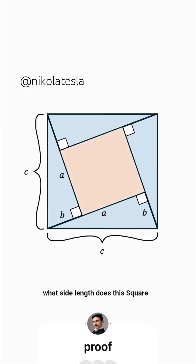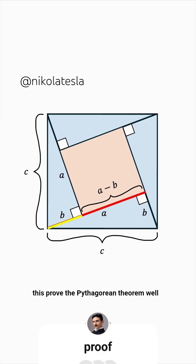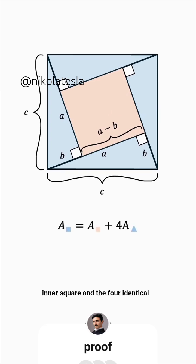What side length does this square have? Well, this entire length is A, but this chunk is B. So the square has side length A minus B. How does this prove the Pythagorean theorem? Well, we can now find the area of the big square as the sum of the area of the inner square and the four identical triangles.